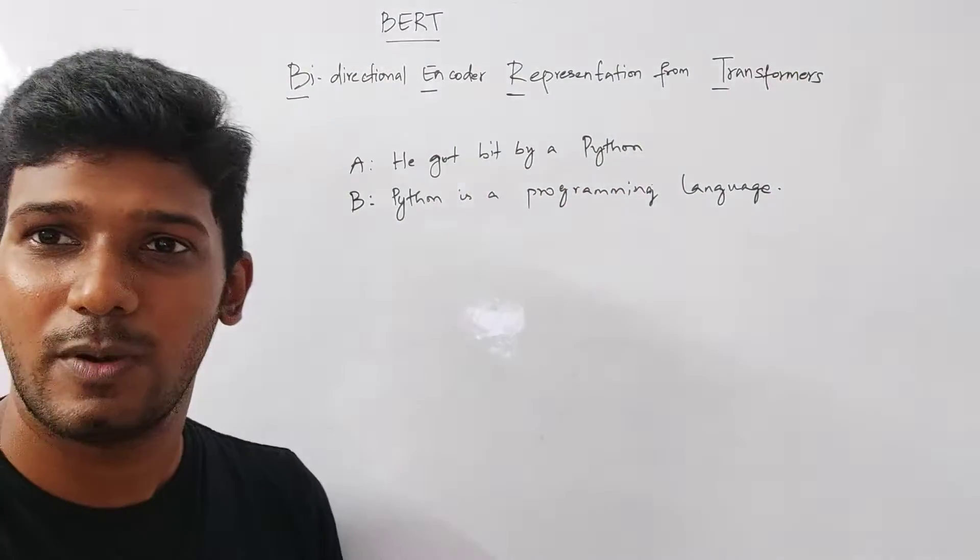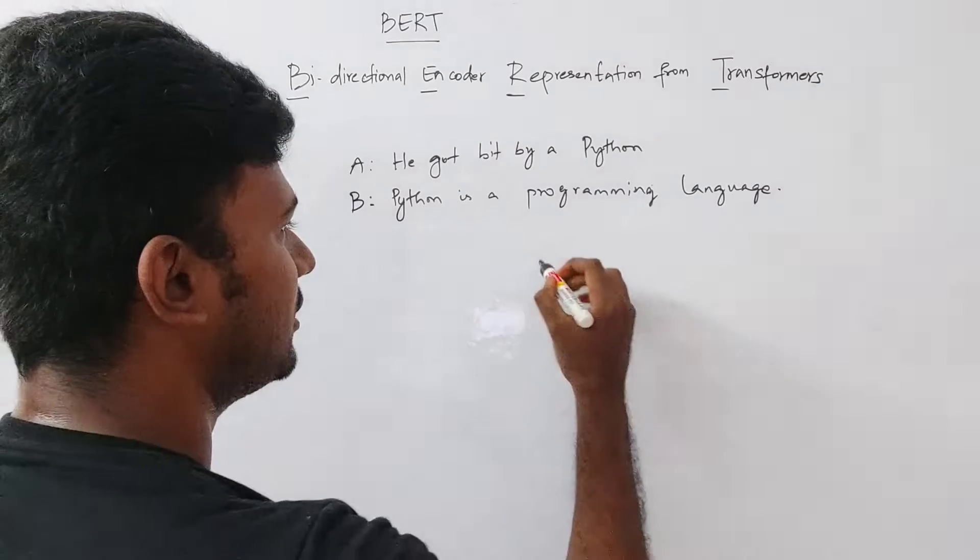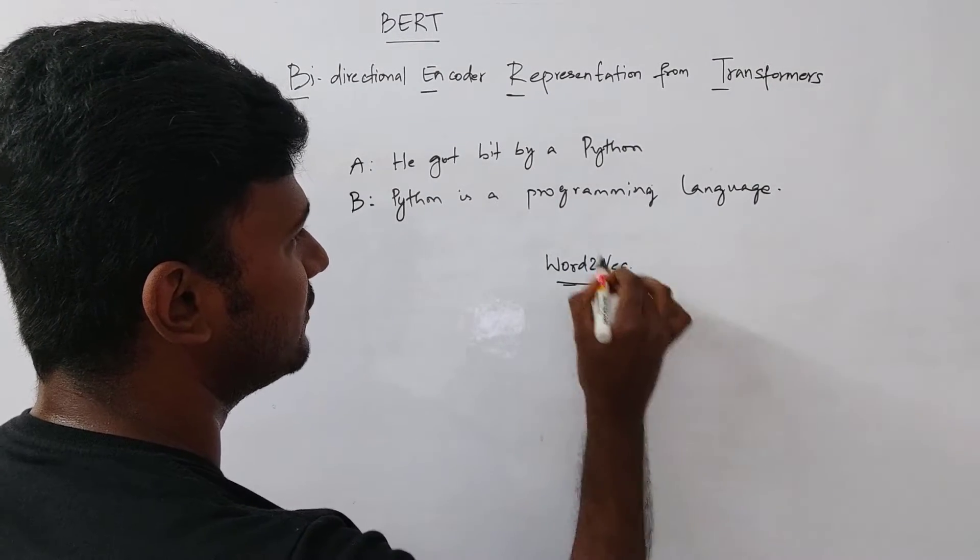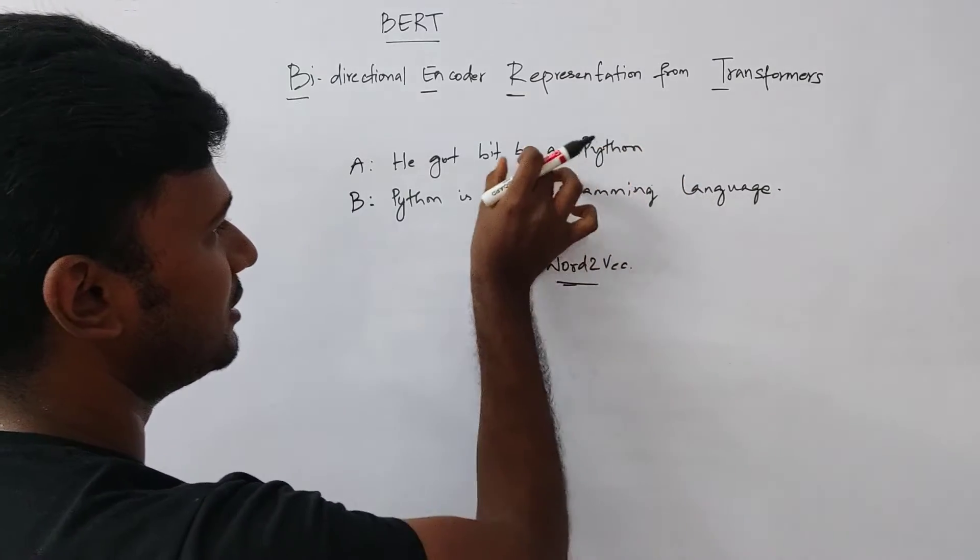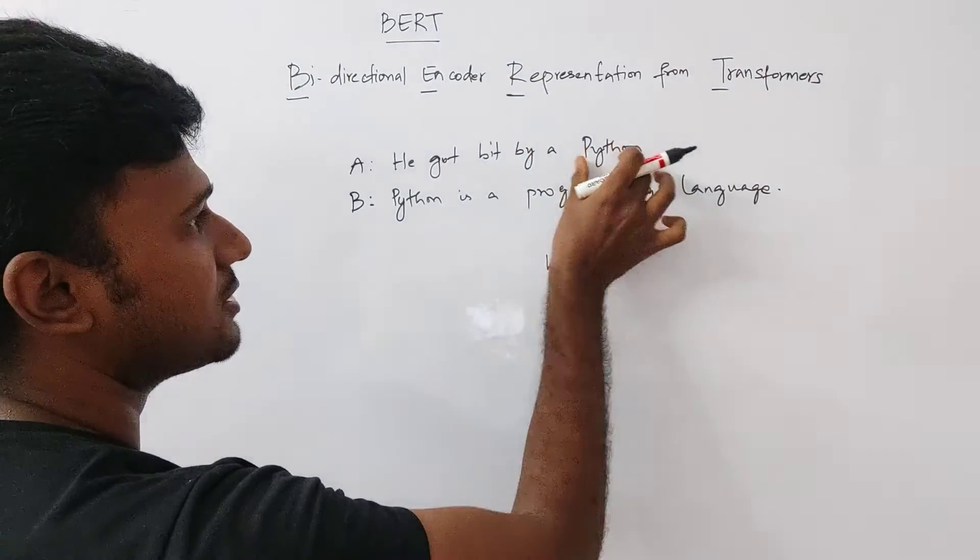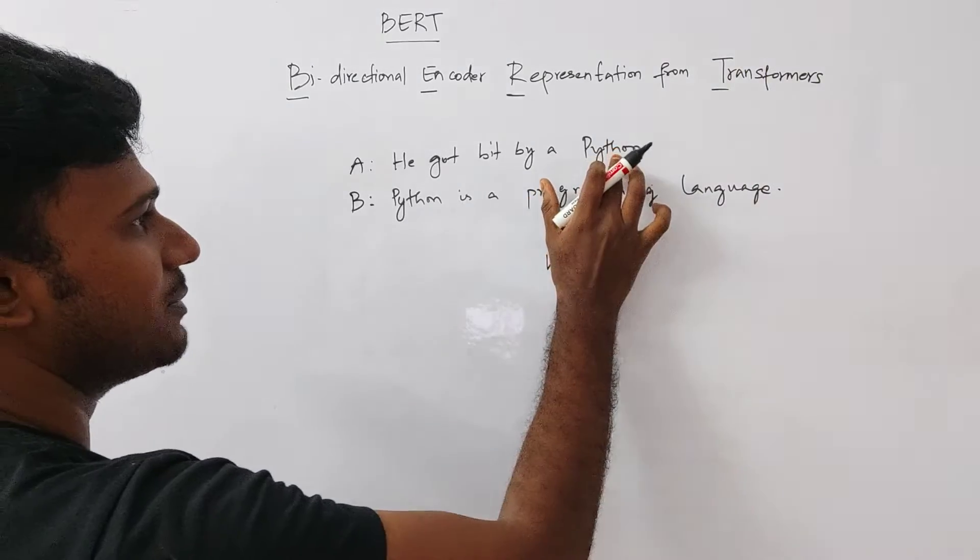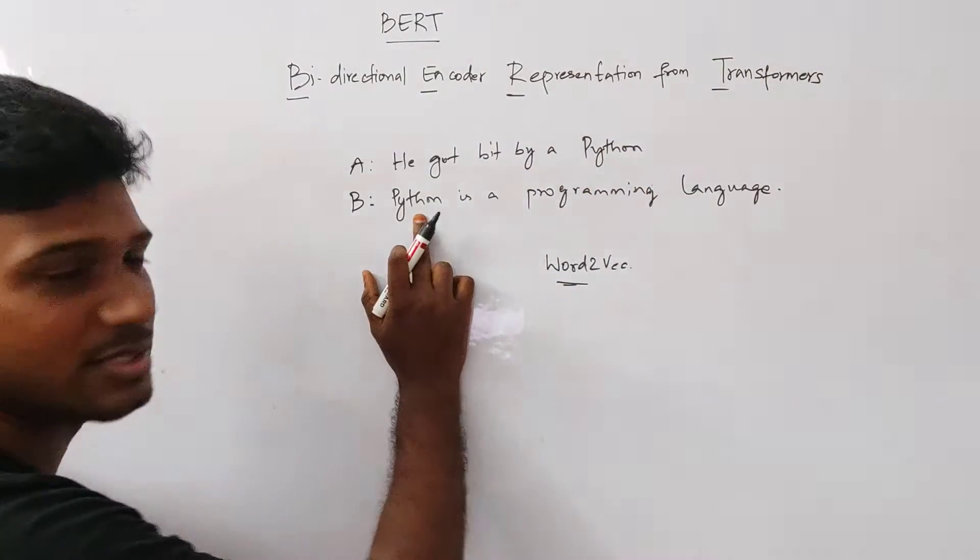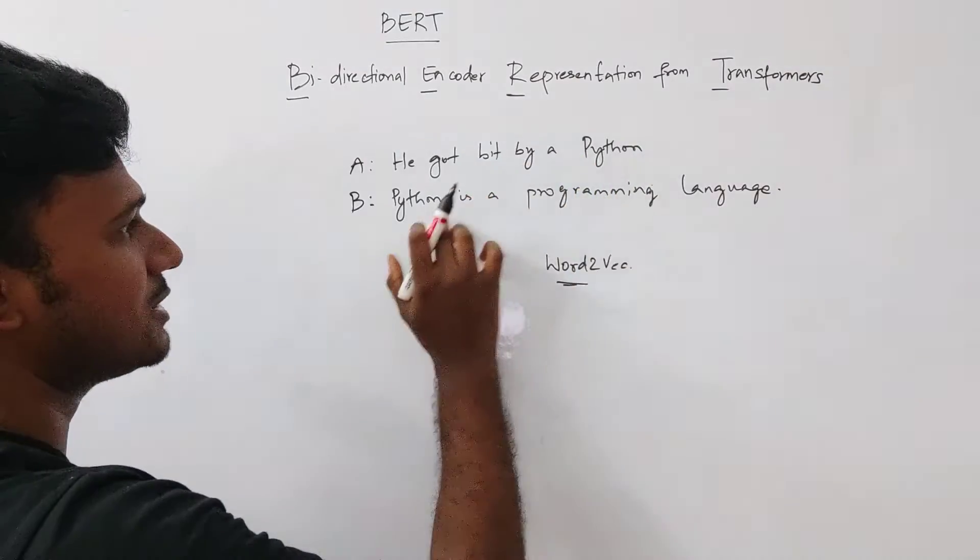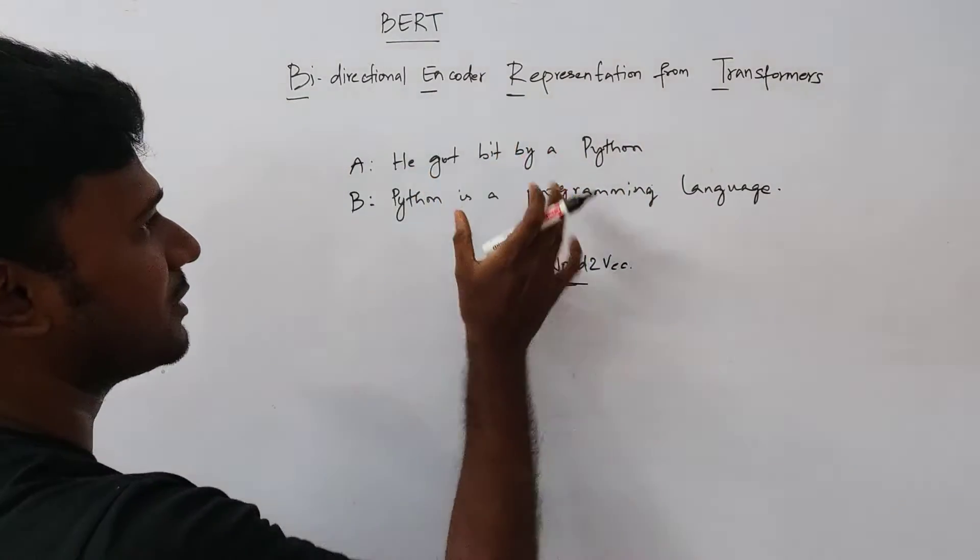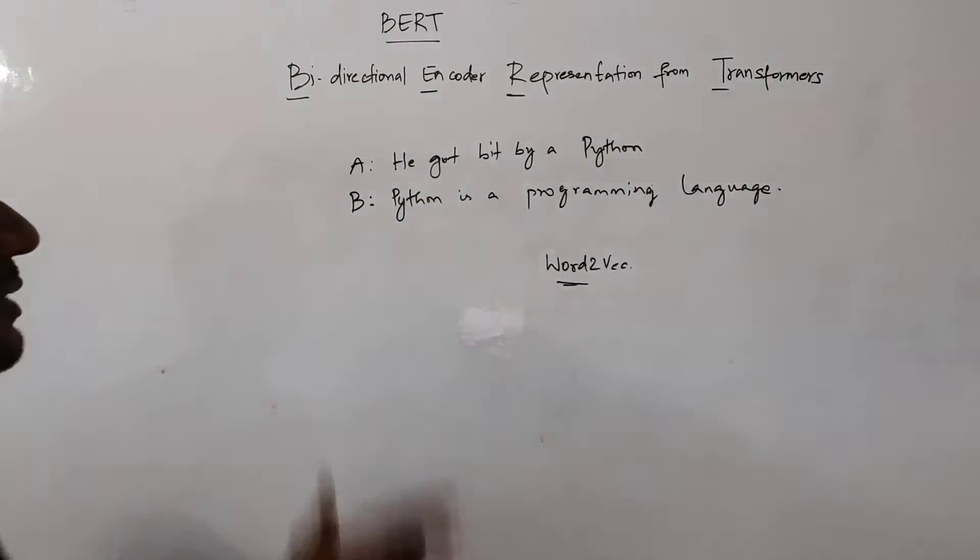So if we take some of the embeddings like Word2vec, Word2vec basically gives the representation of each word, but it is not depending on the context. Word2vec would basically use the same embeddings for this python as well as this python. So both of these pythons will not carry the contextual information of the previous sentences or the preceding sentences.